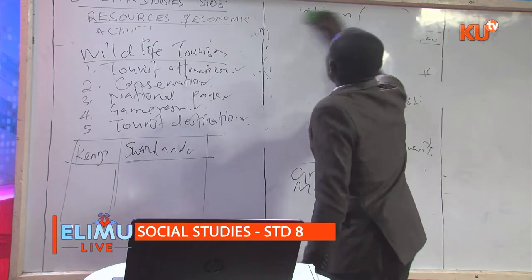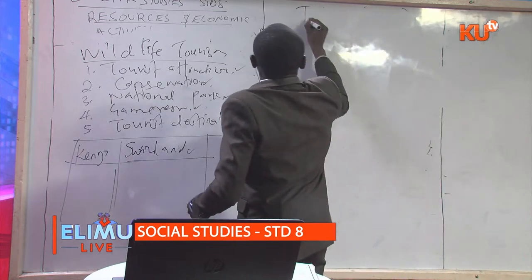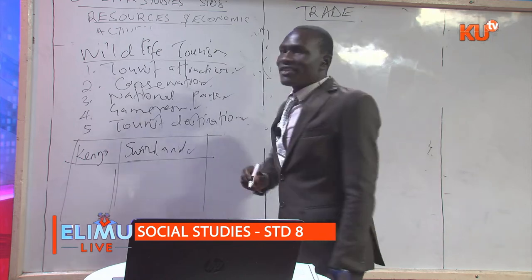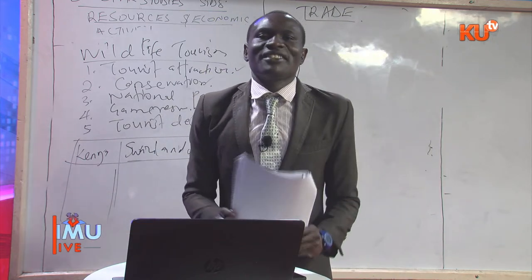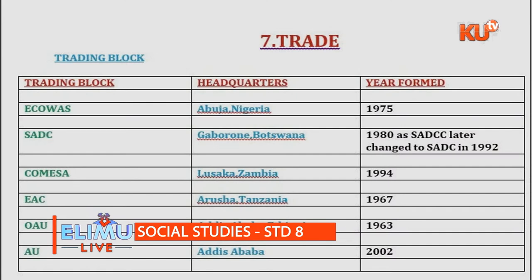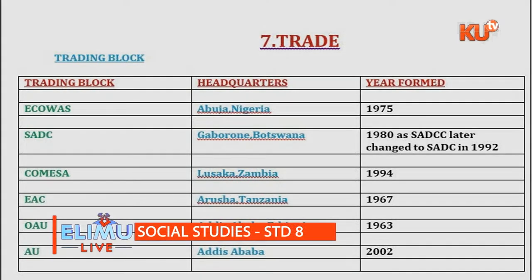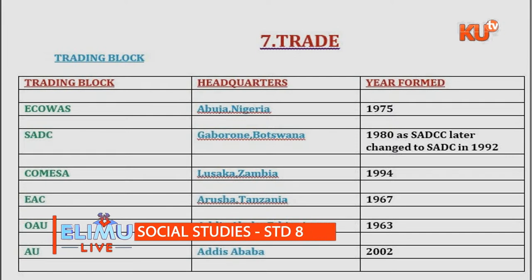Another area most commonly examined is trade, which is the exchange of goods and services. On trade, you should know the trading blocks. We have four or five trading blocks: ECOWAS, SADC, COMESA, and EAC. OAU and AU are also indicated as they are related. A candidate should be able to know the headquarters and the years they were formed. Note that SADC was formed in 1980 and later changed to SADC in 1992.